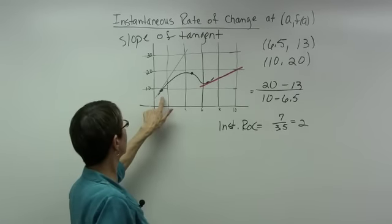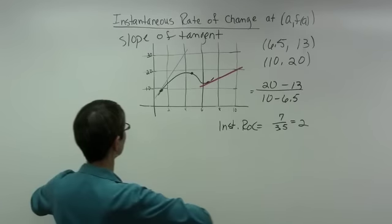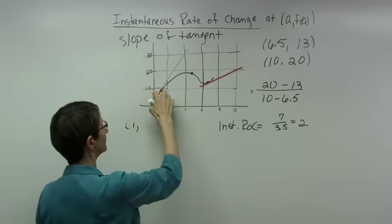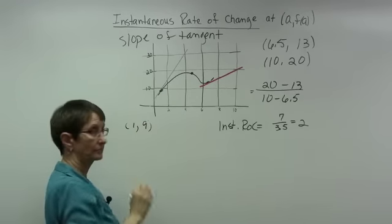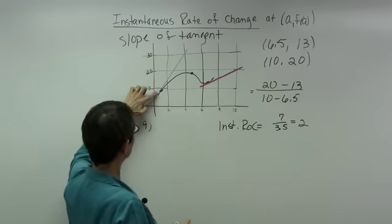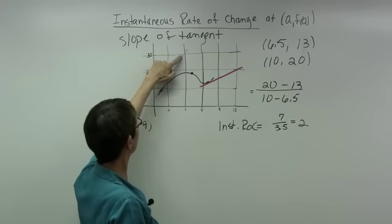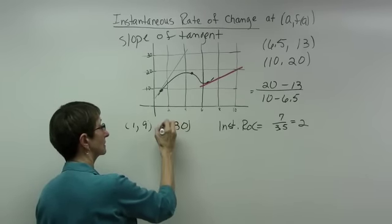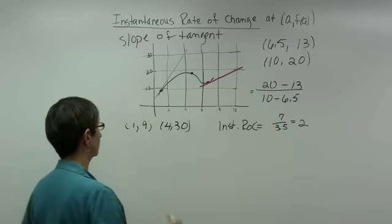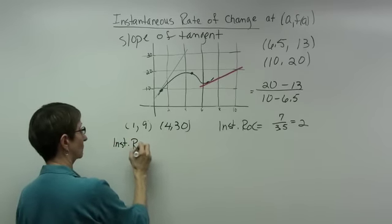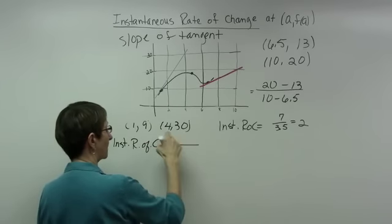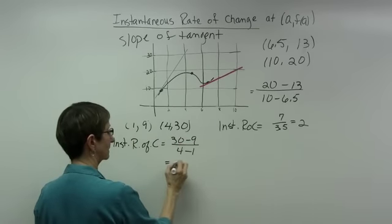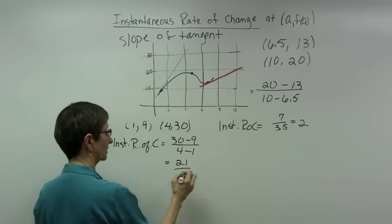Now let's look at the blue line. The point of tangency appears to be at x equal to 1 and y equal to 9. Another point on the line is at x equal to 4 and y equal to 30. So the instantaneous rate of change is: y's are 30 minus 9 giving 21, x's are 4 minus 1 giving 3 — so 21 over 3 equals 7.